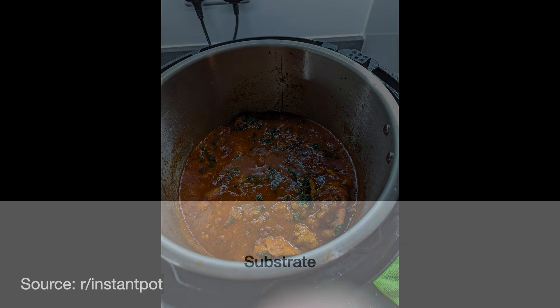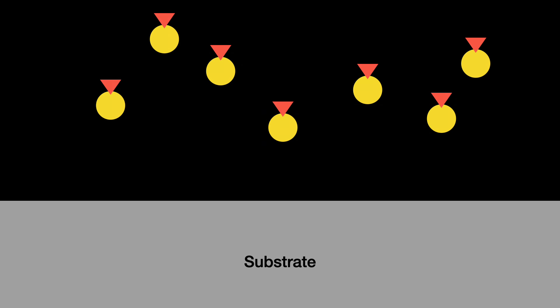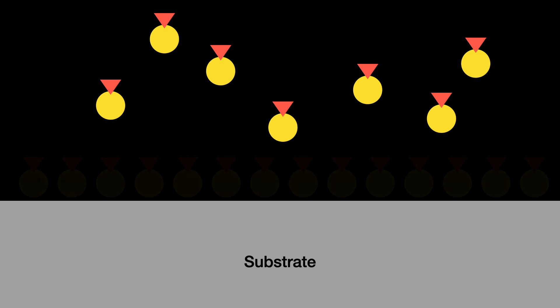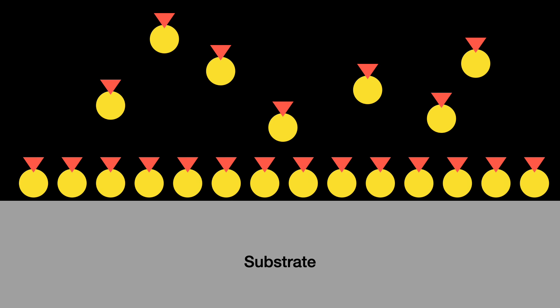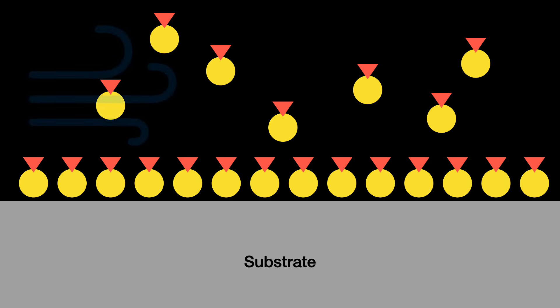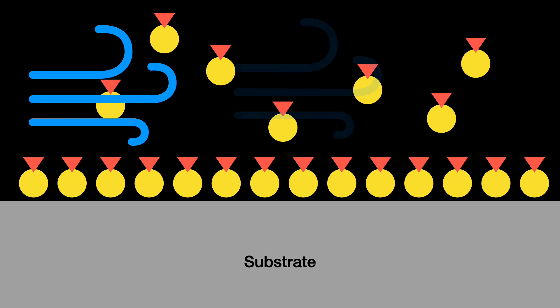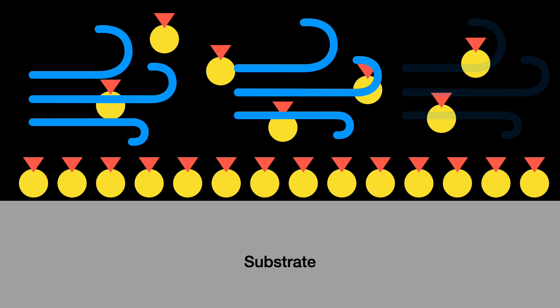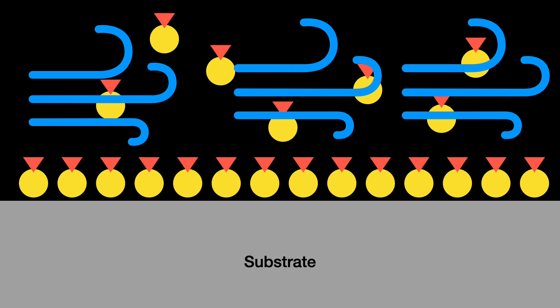First, we pulse a primary reactant onto the substrate. Some of this reactant gets chemically absorbed into the substrate. Then we purge the reactant by flushing an inert gas through the reactor chamber, which cleans off any reactants that have not been absorbed into the substrate.